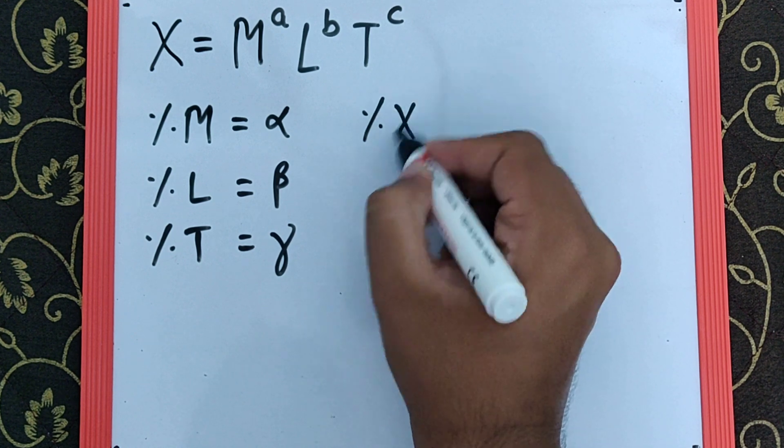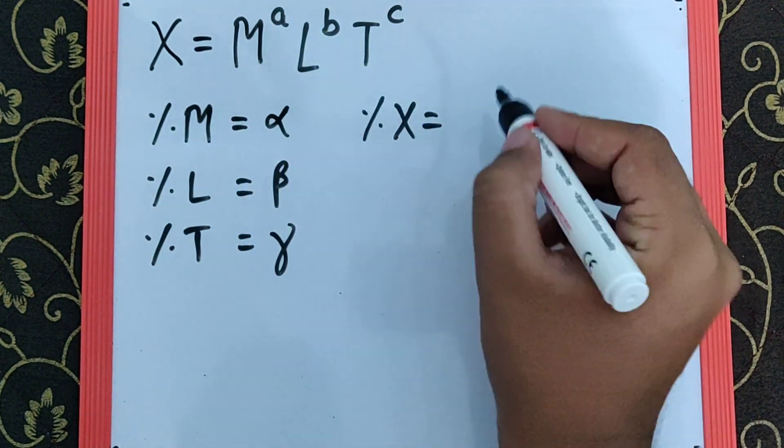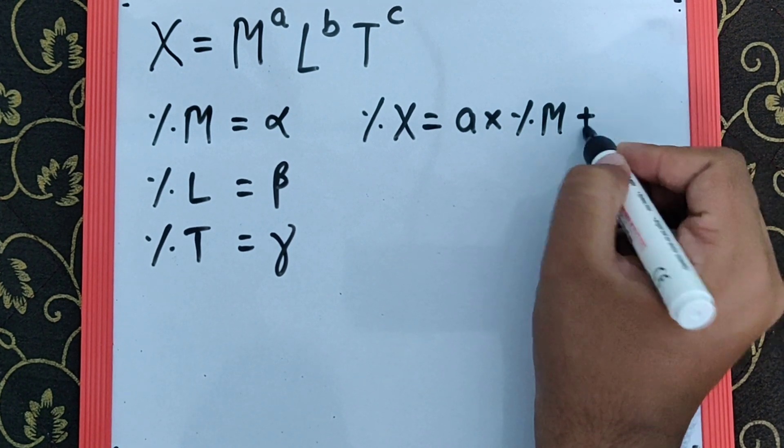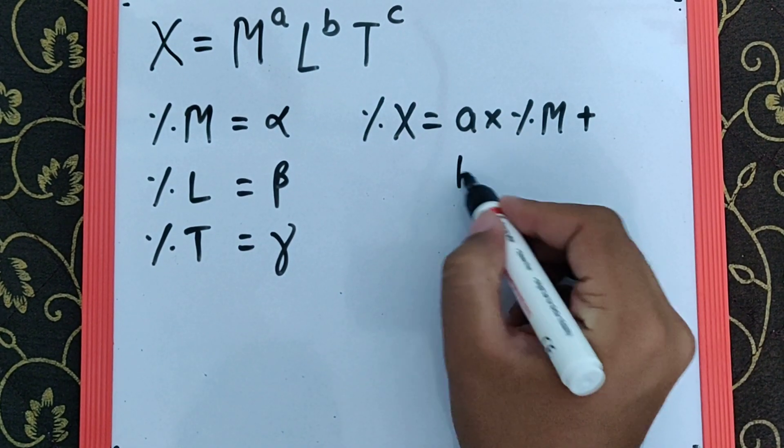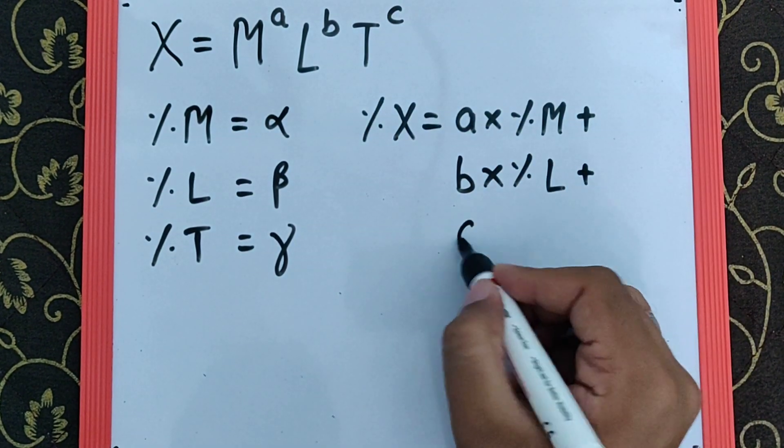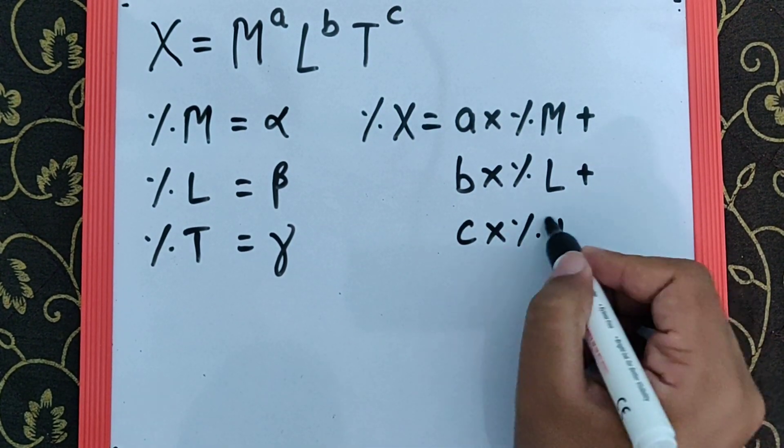the percentage error in X is going to be the power, a, times percentage error in M, plus the power, b, times percentage error in L, plus the power, c, times the percentage error in T.